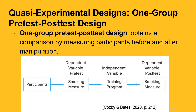Here we have an improved version of the previous design, and now we've included a pre-test. In this example, there will be only one group and we will measure their smoking behaviors, then introduce a treatment, then measure their smoking behaviors again. The benefit here is that the outcome after the treatment can be compared to the same measure before the treatment was given. The limitation is that there is still no control group, so we would not be able to account for some type of placebo or expectancy effect. Also, there's no clear manipulation of the independent variable.